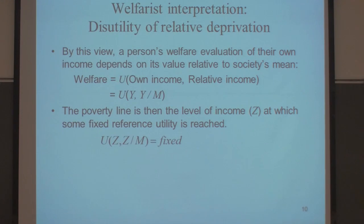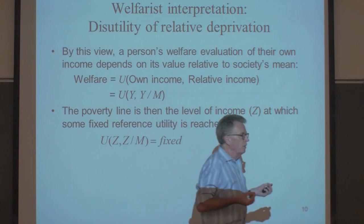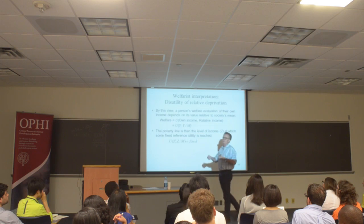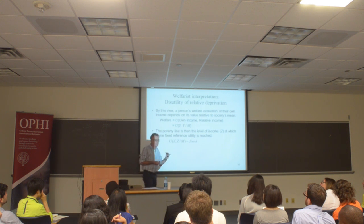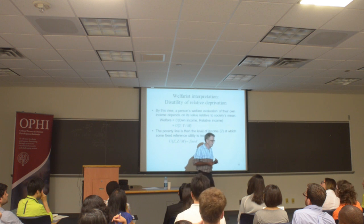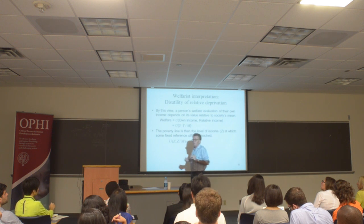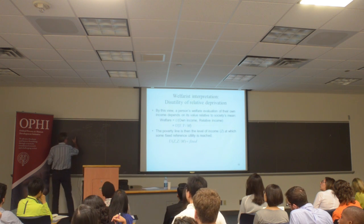Let's look at the welfareist justification. The idea here is that poverty should be absolute in the space of welfare. We should judge people with the same level of welfare the same way in different countries. That's different from saying we should judge people with the same real income the same way. Here the invariance is in welfare space, not income space.